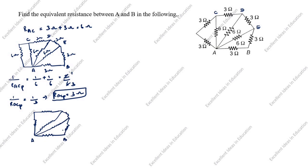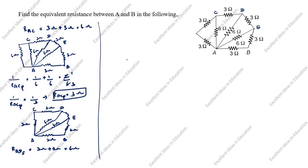Redrawing again with nodes A, B, C, D: resistances 3 ohm, 3 ohm, 6 ohm, 6 ohm, 6 ohm, 3 ohm, 3 ohm. Next, these two resistors are in series, so R_AD_series = 3 ohm + 3 ohm = 6 ohm. Redrawing the circuit.